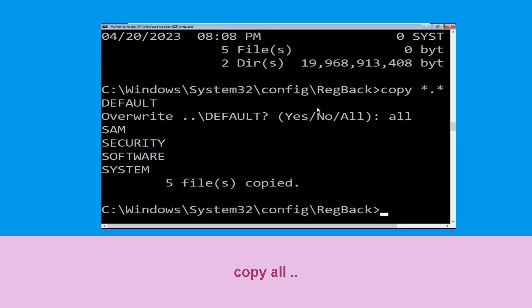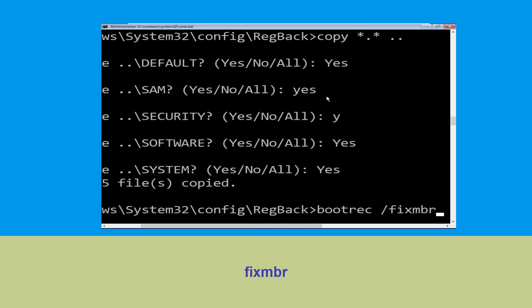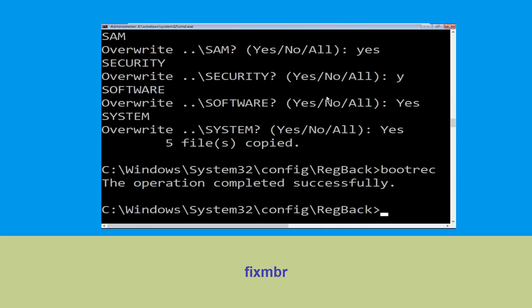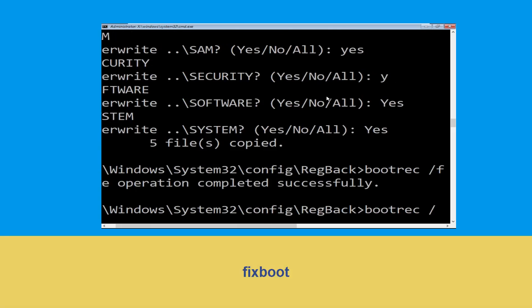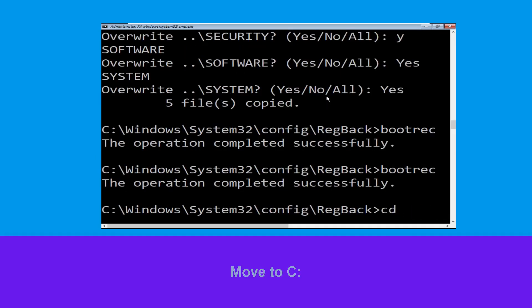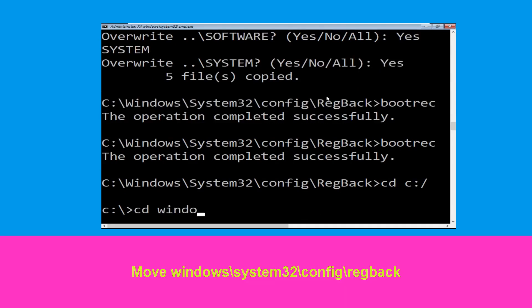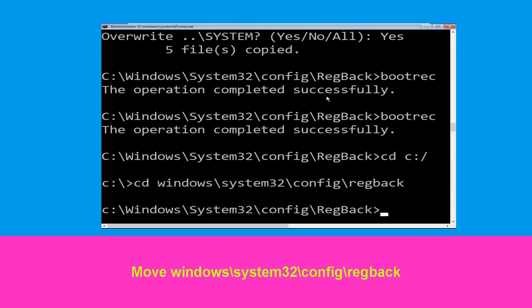Type all and hit enter to execute the command. Type bootrec /fixmbr and hit enter to execute the command. Type bootrec /fixboot and hit enter. Now type cd c:\ and hit enter. Then type cd windows\system32\config\regback and hit enter to execute this command.